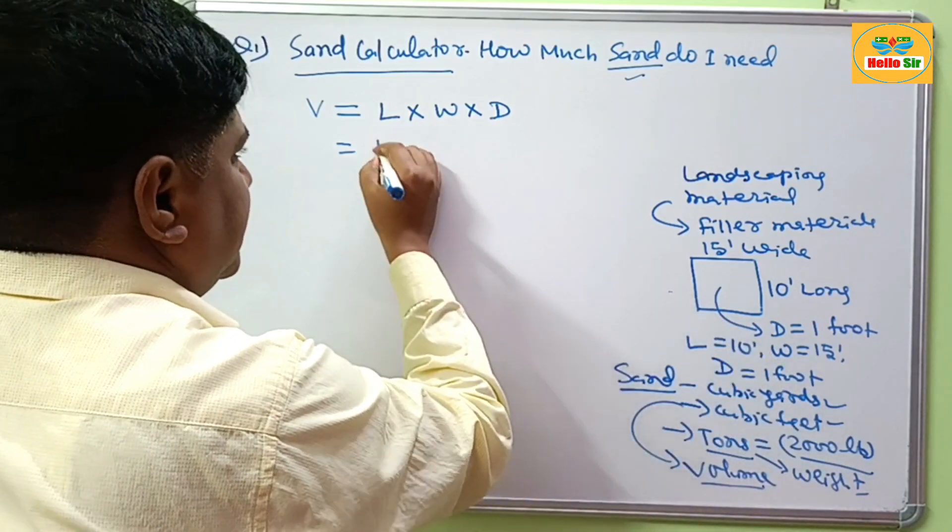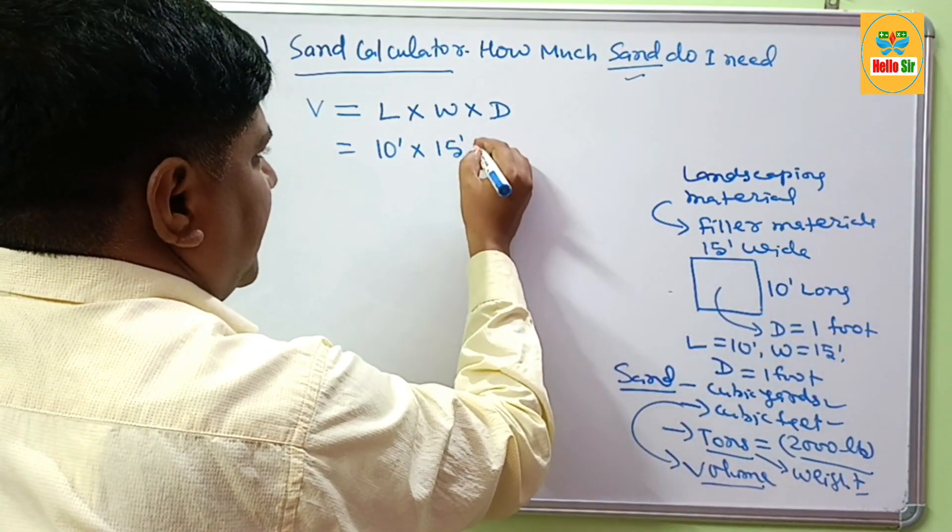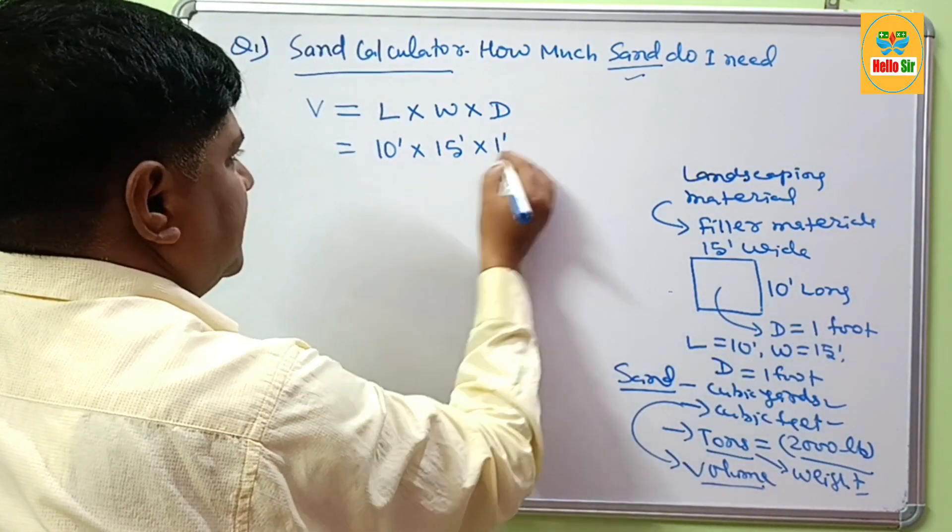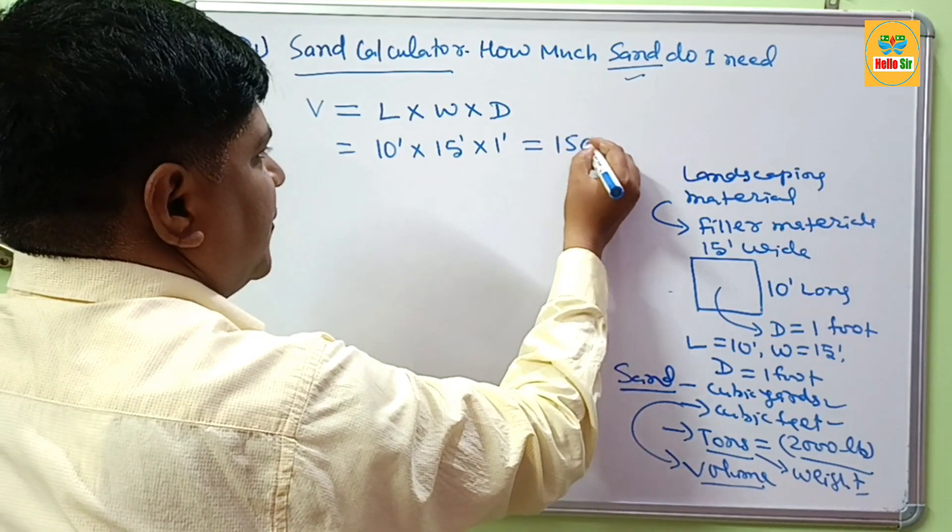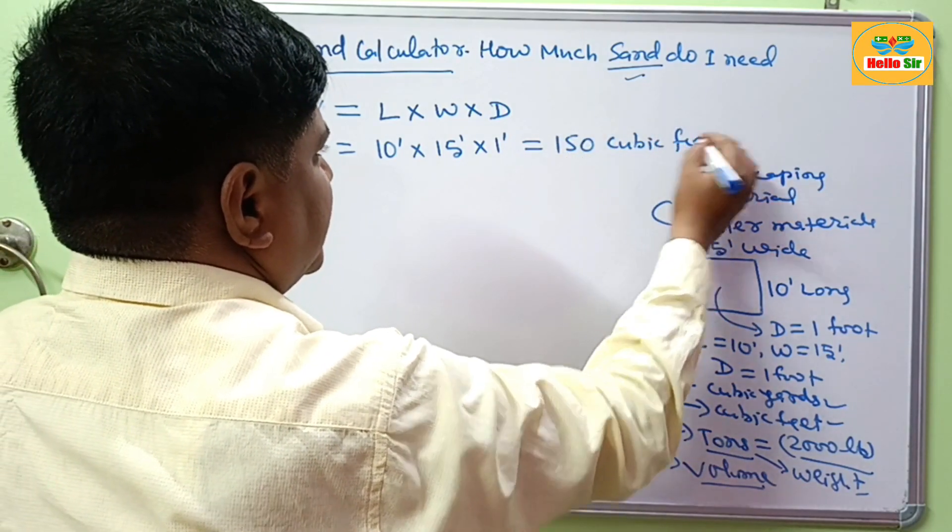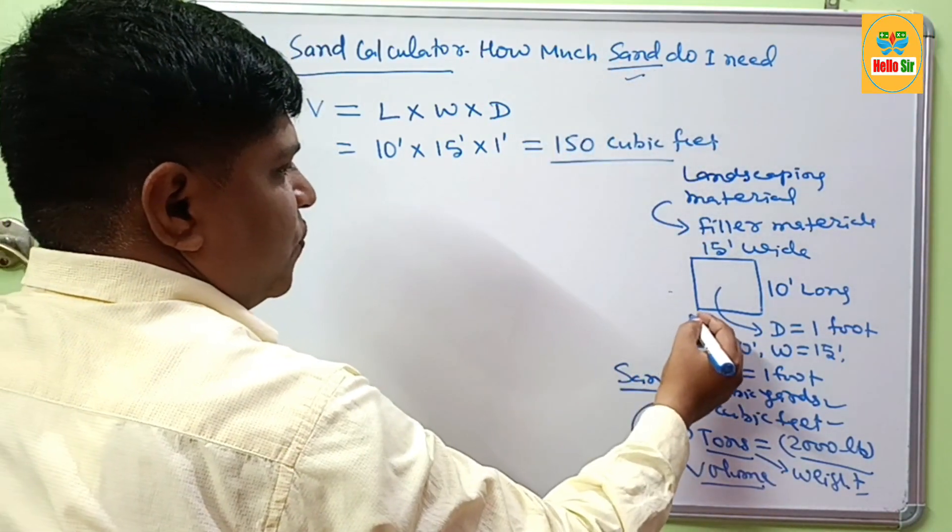Length is 10 foot, width is 15 foot, and depth of your project is 1 foot. Multiply all these, this will come to 150 cubic feet. It means 150 cubic feet amount of sand is required for this project.